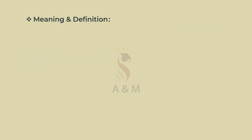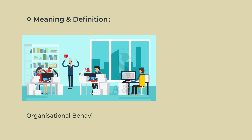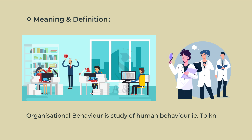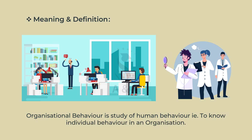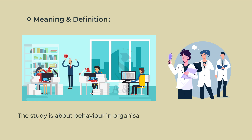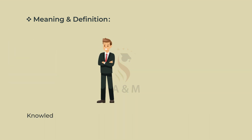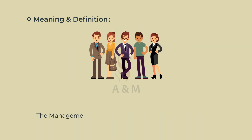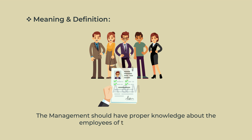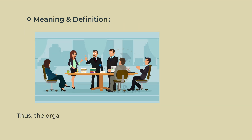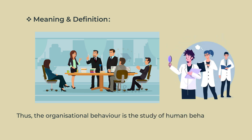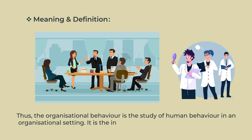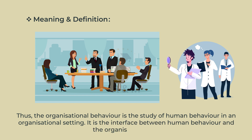Now let us understand the meaning of organizational behavior. Organizational behavior is the study of human behavior — that is, to know individual behavior in an organization. The study is about how individuals are behaving in an organization. Knowledge about human behavior would be useful in improving an organization's effectiveness. The management should have proper knowledge about the employees of the organization. Thus, organizational behavior is the study of human behavior in an organizational setting, and it is the interface between human behavior and the organization itself.